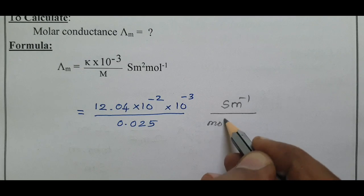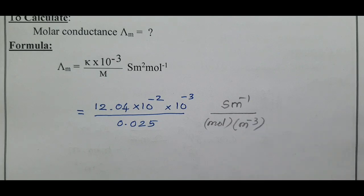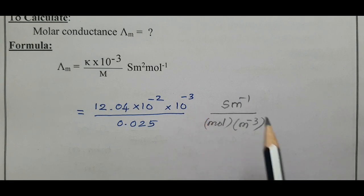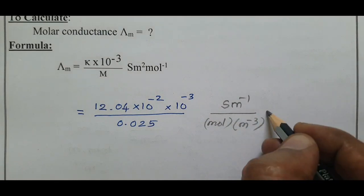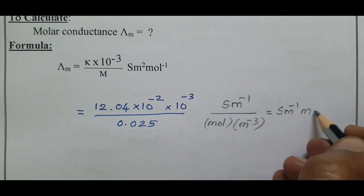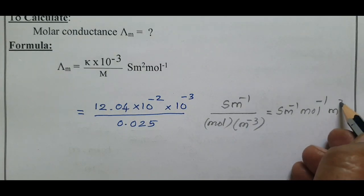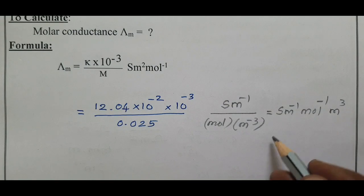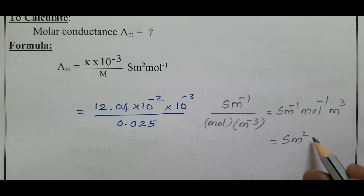Molarity in mol·L⁻¹ equals mol per 10⁻³ m³. When you bring mol·m³ to the numerator it becomes S·m⁻¹, and bringing mol to the numerator as mol⁻¹ and m⁻³ to the numerator as m³, that gives S·m³·m⁻¹, which simplifies to S·m²·mol⁻¹.